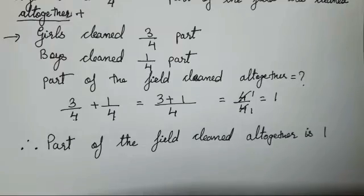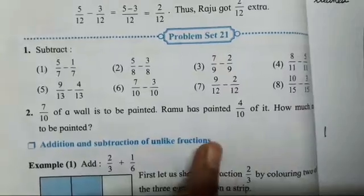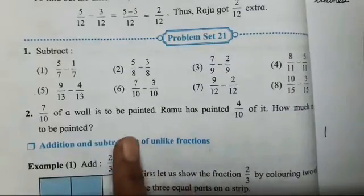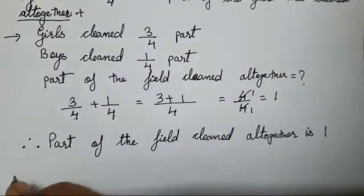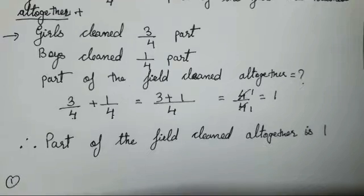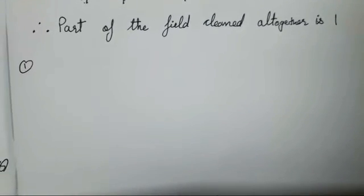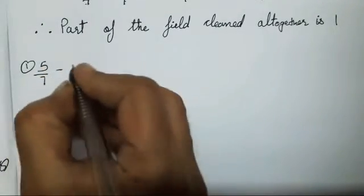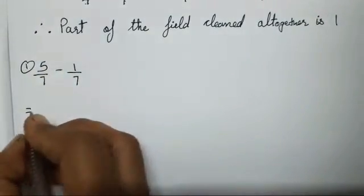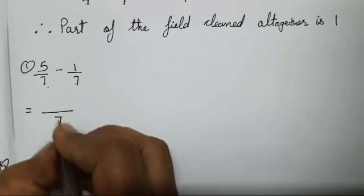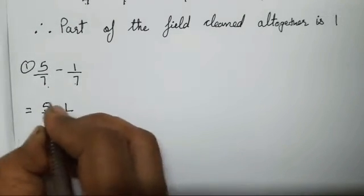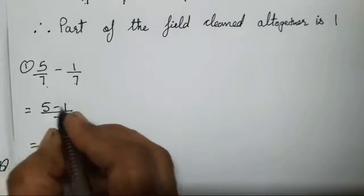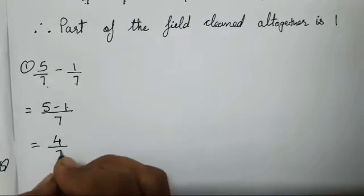Now let's solve problem set 21. Same kind of sums have been given — you can check the textbook on page number 28. Only subtraction we have to do. The first sum is 5 upon 7 minus 1 upon 7. The denominator 7 is there, let's write it once. 5 minus 1 is 4 upon 7.